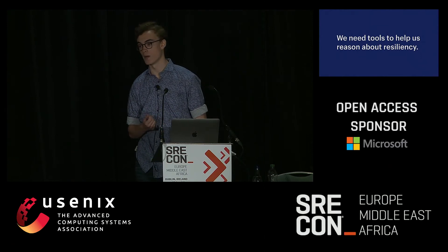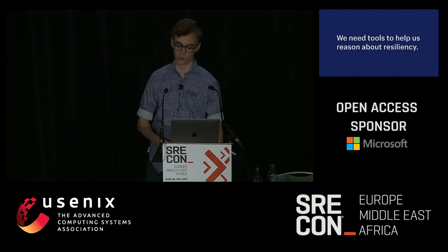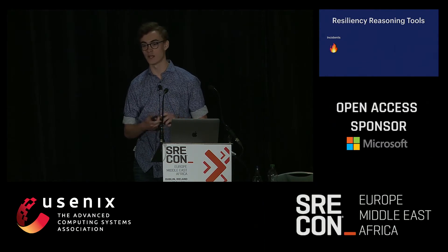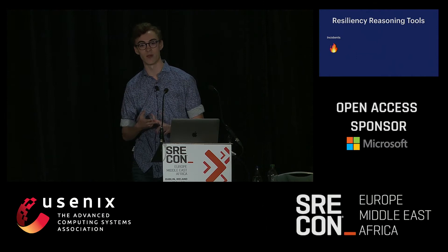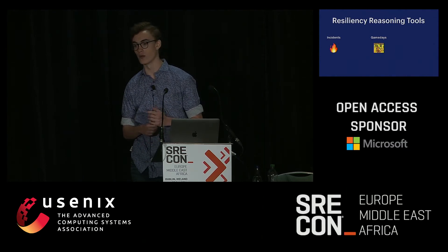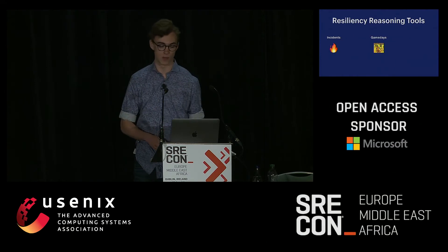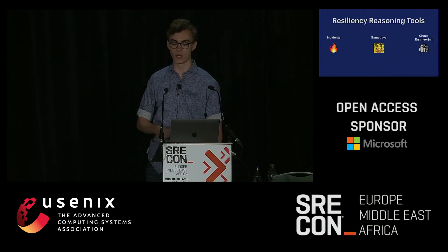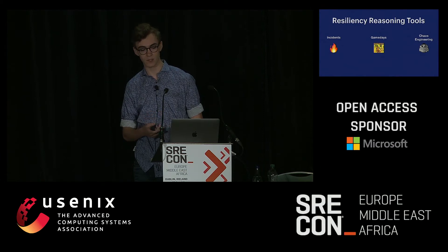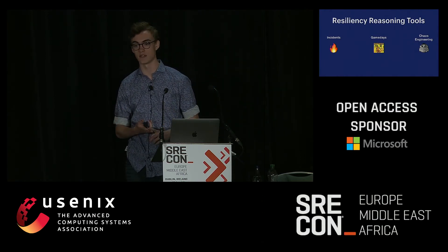We need tools to help us reason about resiliency — we can't rely on our gut. There are a bunch of different kinds of tools we can use. Probably the one you're all familiar with are incidents: after an incident you find out how your application reacts to a certain failure, and that's when you have a chance to improve it. You also have game days, where you actually cause failures in your application to exercise certain failure scenarios. And then there are chaos engineering tools like Chaos Monkey, where you're automatically causing failures in production. You have to actually exercise your application to see how it will really react.